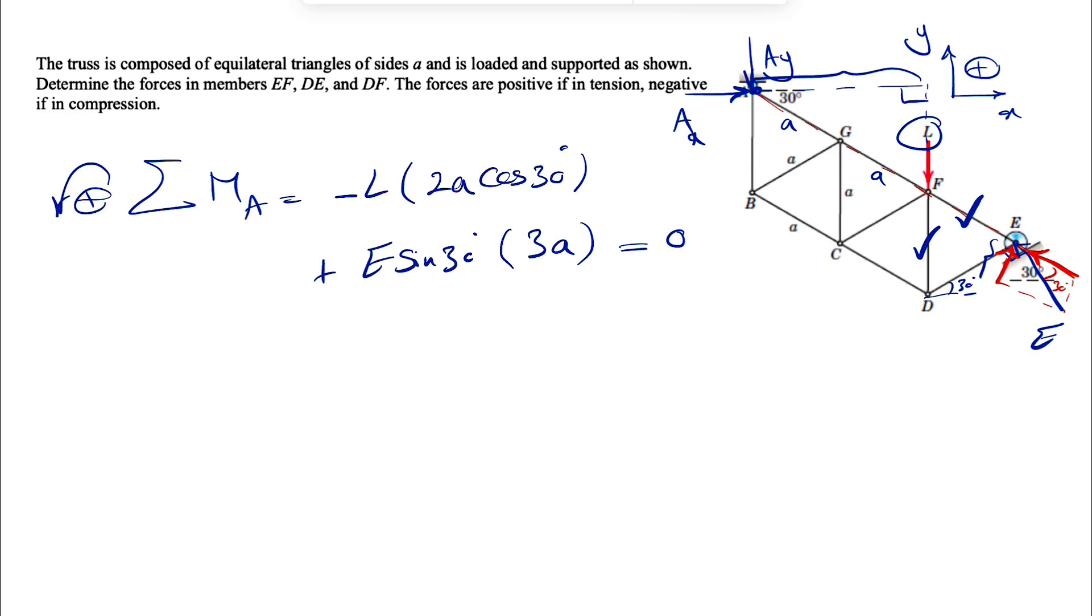And this will be equal to zero, and we can find E in here, which will be 2AL cosine of 30 degrees over 3A sine of 30 degrees, and we can cancel out A in here, and we know cosine of 30 degrees is the square root of 3 over 2, and sine of 30 degrees is 1 half.